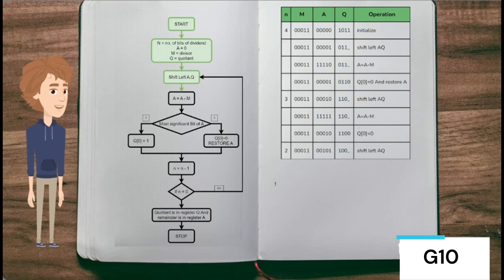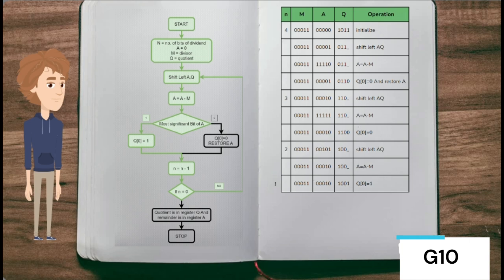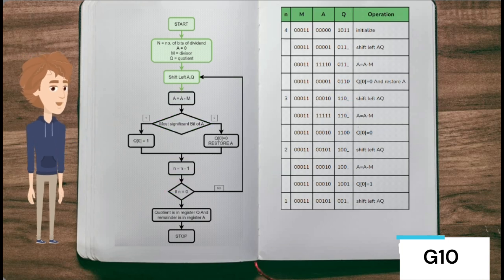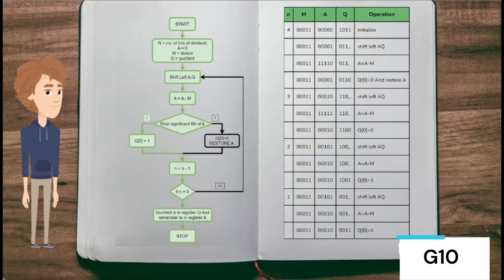In the next step, registers A and Q are again shifted left as a single unit. Register M is subtracted from A and the result is stored in A. The most significant bit of A is checked — if it is 0, the least significant bit of Q is set to 1. The same process repeats: A and Q are shifted left, M is subtracted from A, and the MSB of A is checked. If it is 0, the LSB of Q is set to 1.